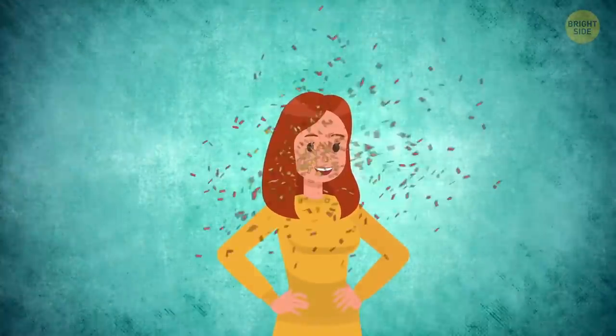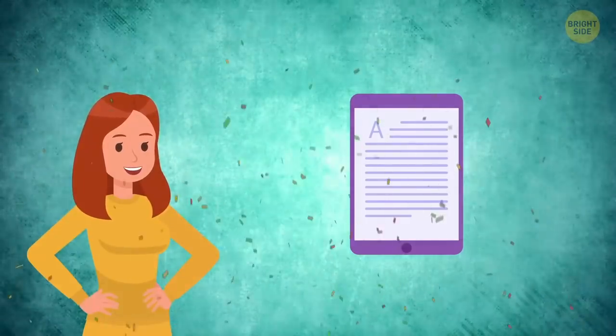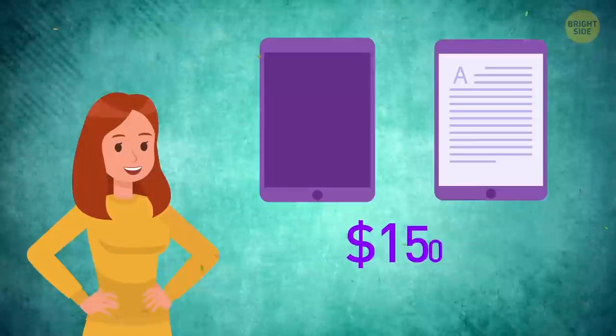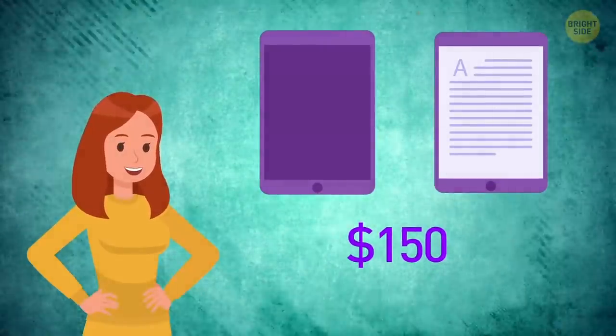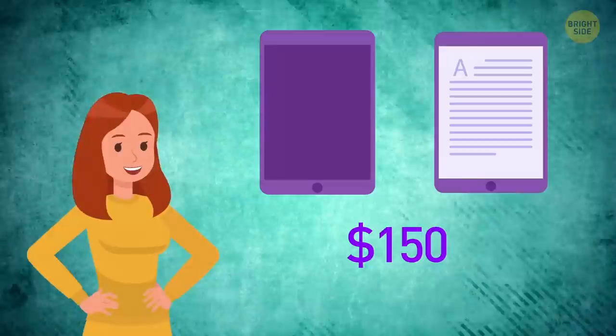It was Aviana's birthday, and she went to buy herself an e-book she'd been dreaming about. The e-book and the case cost $150 in total. If the e-book was $100 more expensive than the case, how much did each item cost?